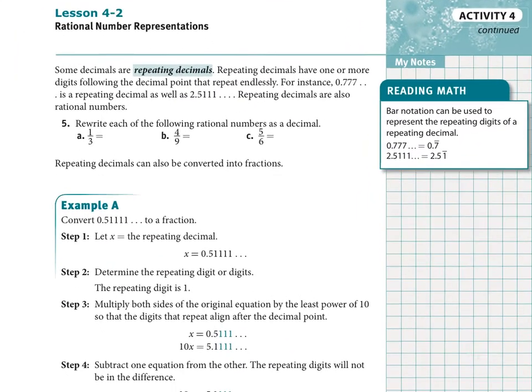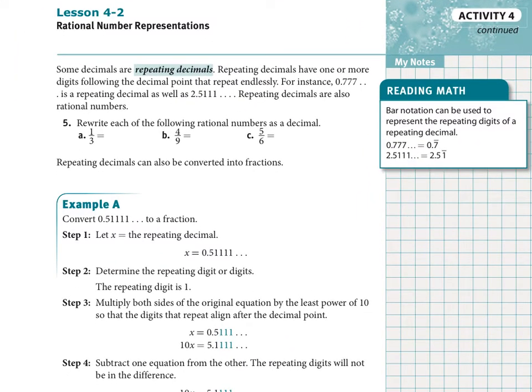Some decimals are repeating decimals. They have one or more digits following the decimal point that repeat endlessly. For example, 0.777777, going on forever, that is a repeating decimal. Same with 2.511111, if that goes on forever, those are repeating decimals.